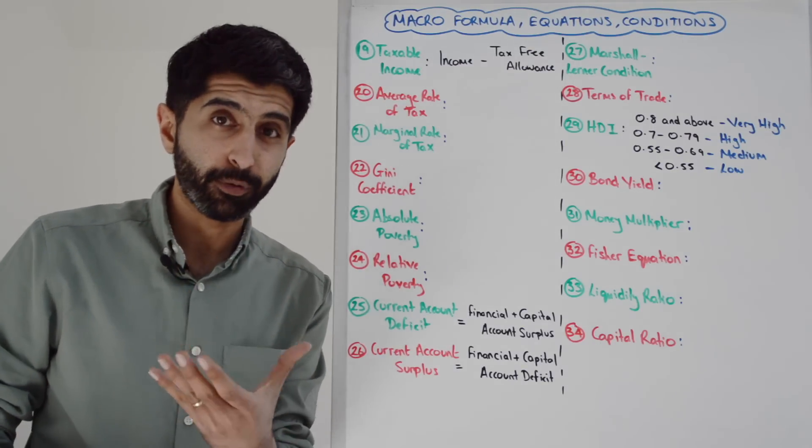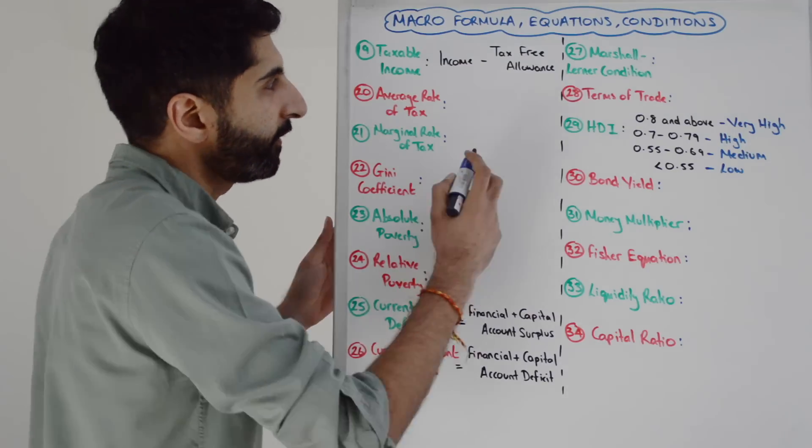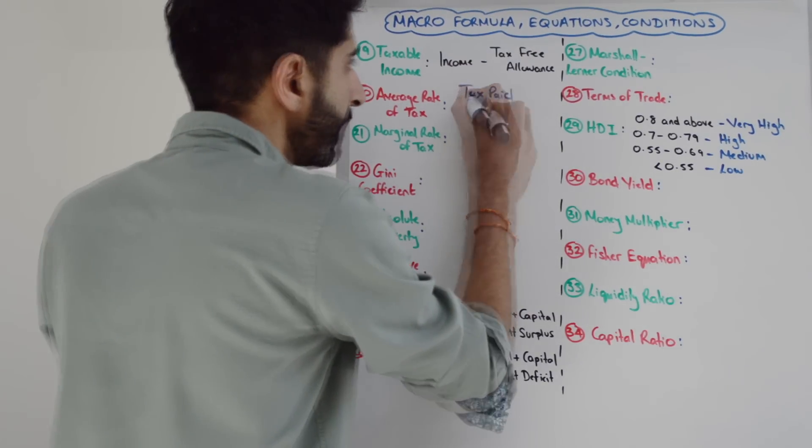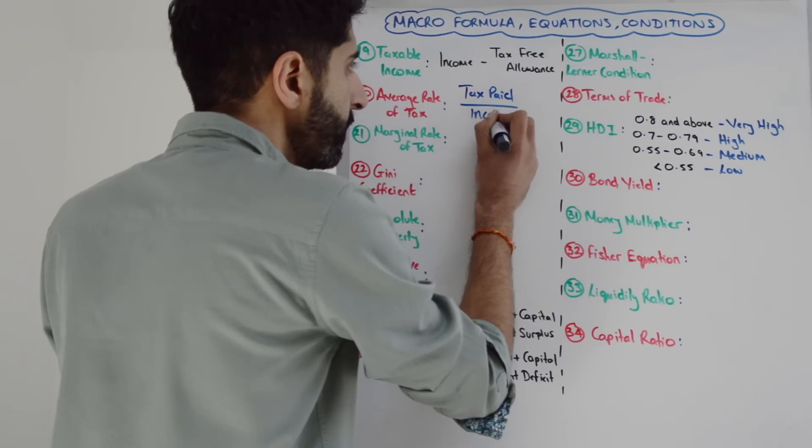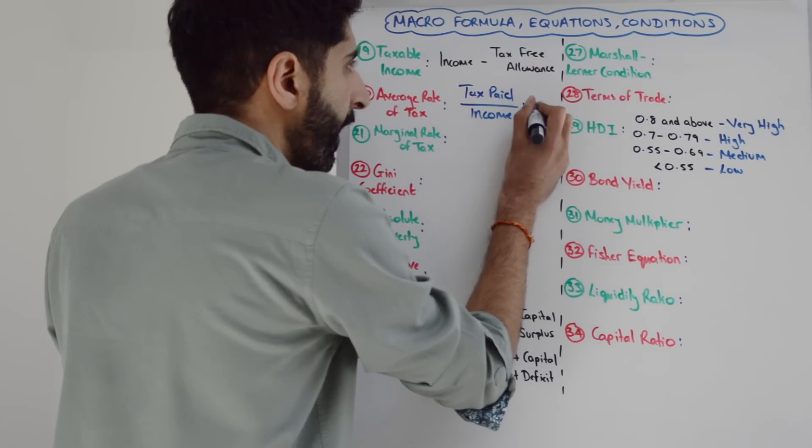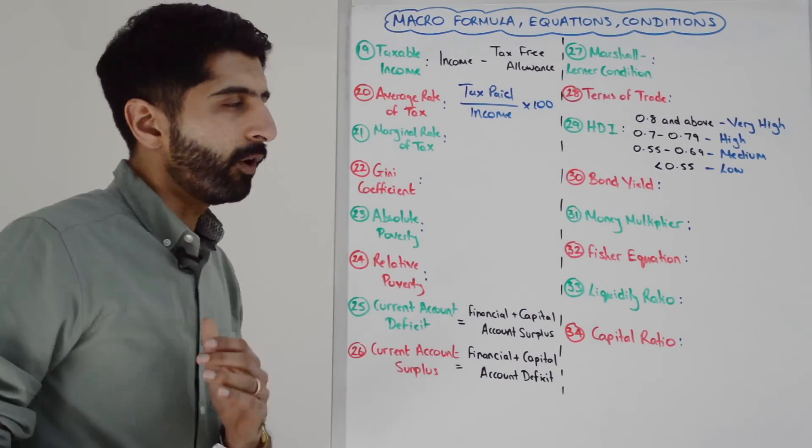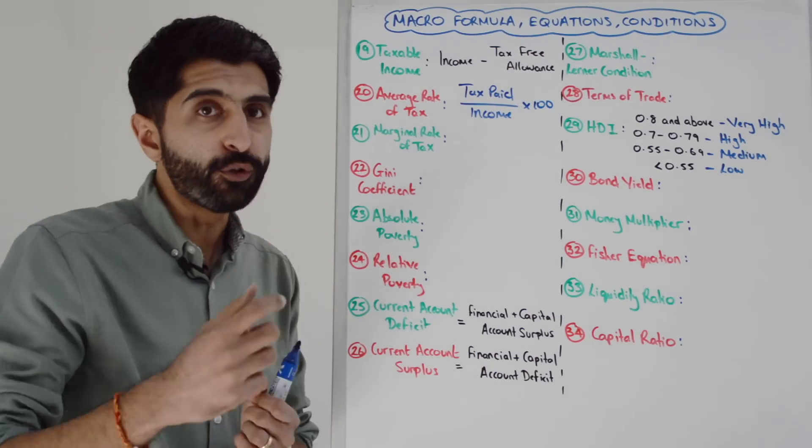What about the average rate of tax? We'll apply that to income tax in a progressive income tax system. This is simply the amount of income tax paid divided by total income earned multiplied by 100.